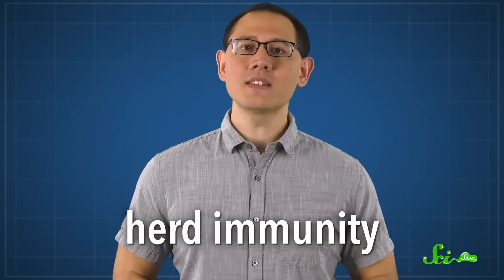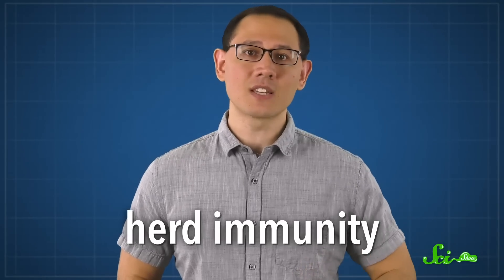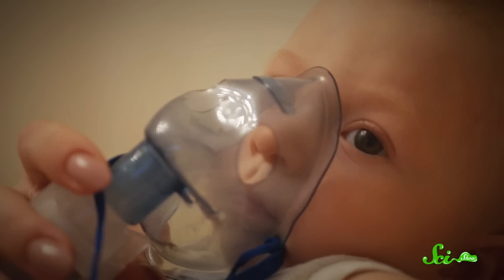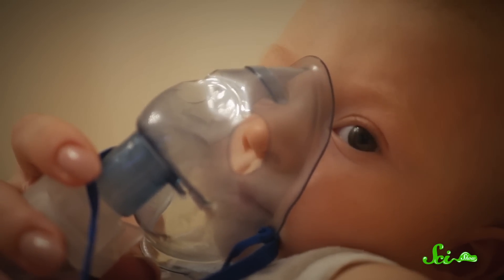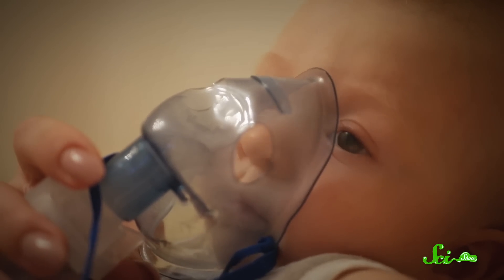Herd immunity ensures there isn't a large enough susceptible population to continue the spread. And that protects people who can't be vaccinated and other vulnerable individuals, like babies or people with compromised immune systems.